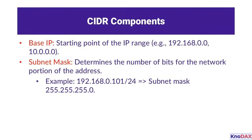For example, in 192.168.0.1/24, the /24 represents the subnet mask. This is equivalent to 255.255.255.0, indicating that the first 24 bits are fixed for the network, while the remaining bits can be used for assigning individual IP addresses within that range. Together, the base IP and subnet mask enable efficient and precise allocation of IP ranges in a network.